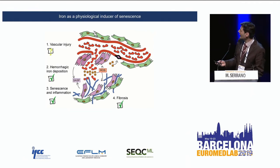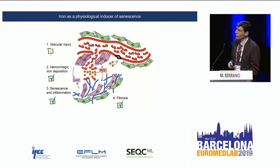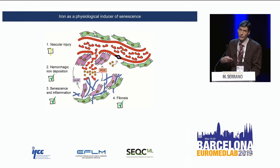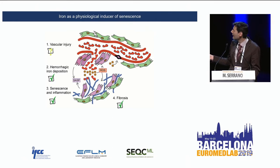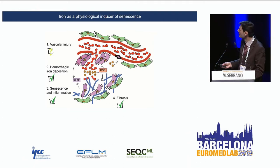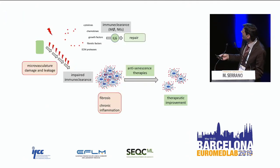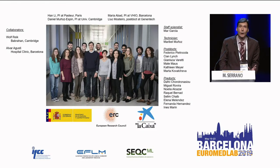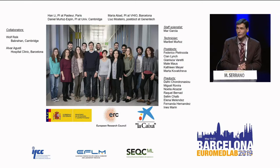We think that microvasculature injuries that happen accidentally — and more so if we smoke or abuse toxics — produce the release of red blood cells that are lysed, releasing iron, which produces senescence. Once this starts, senescence spreads and causes the irreversibility of these fibrotic diseases. Thank you very much.